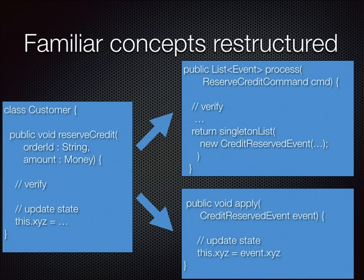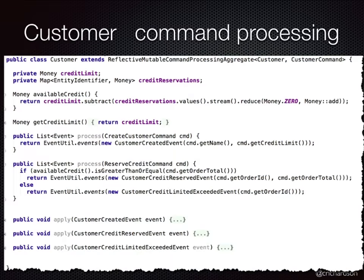The aggregate implements a base class called ReflectiveMutableCommandProcessingAggregate — following the Spring naming convention, but it makes sense because it's an aggregate that knows how to process commands and it's mutable. It uses reflection to dispatch on the event type and command type to the appropriate apply method or process method. In the old way of writing code, you'd have a reserveCredit method that took parameters, implemented business rules, and did a state update. In this model, that method is split into two: a process method implementing the business rules and returning an event representing the state change, and an apply method that takes the event and simply updates state.